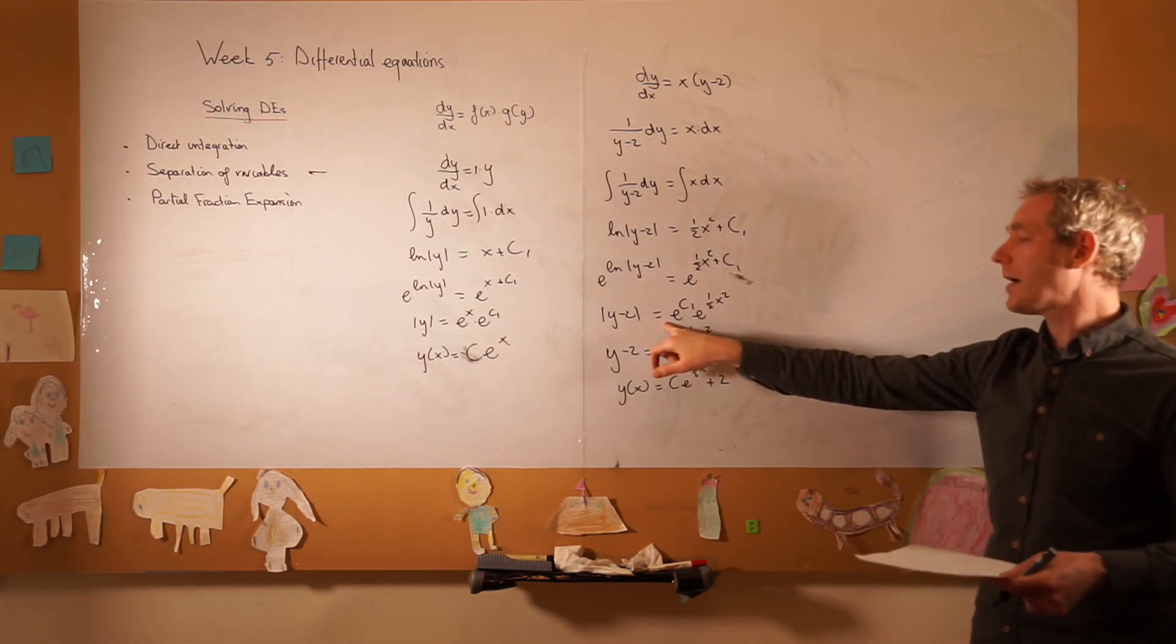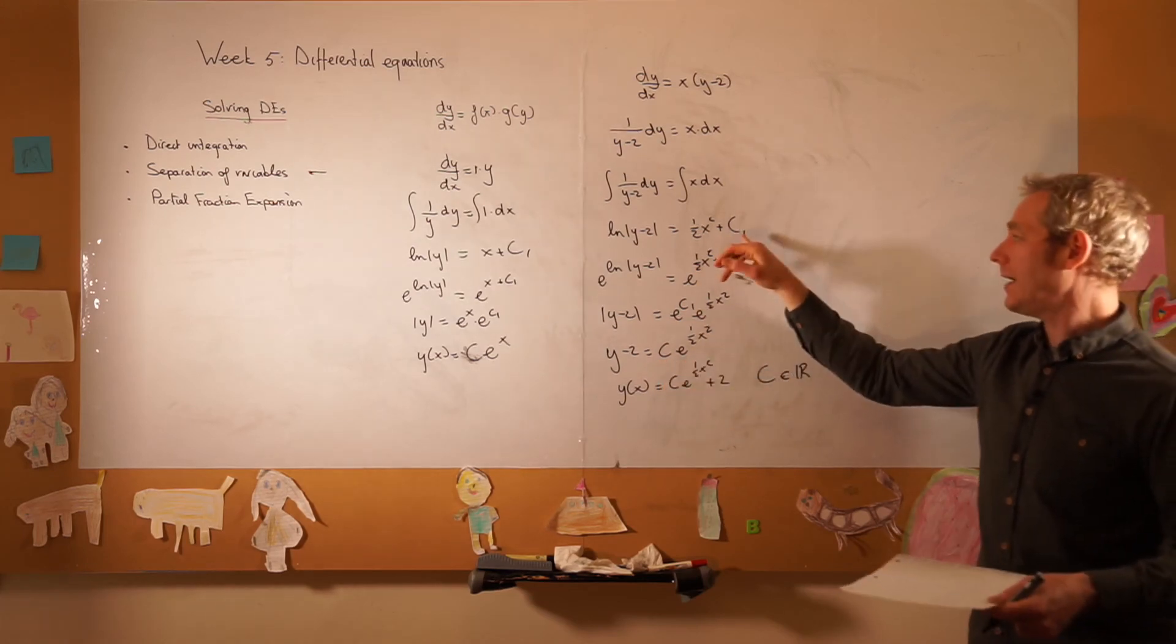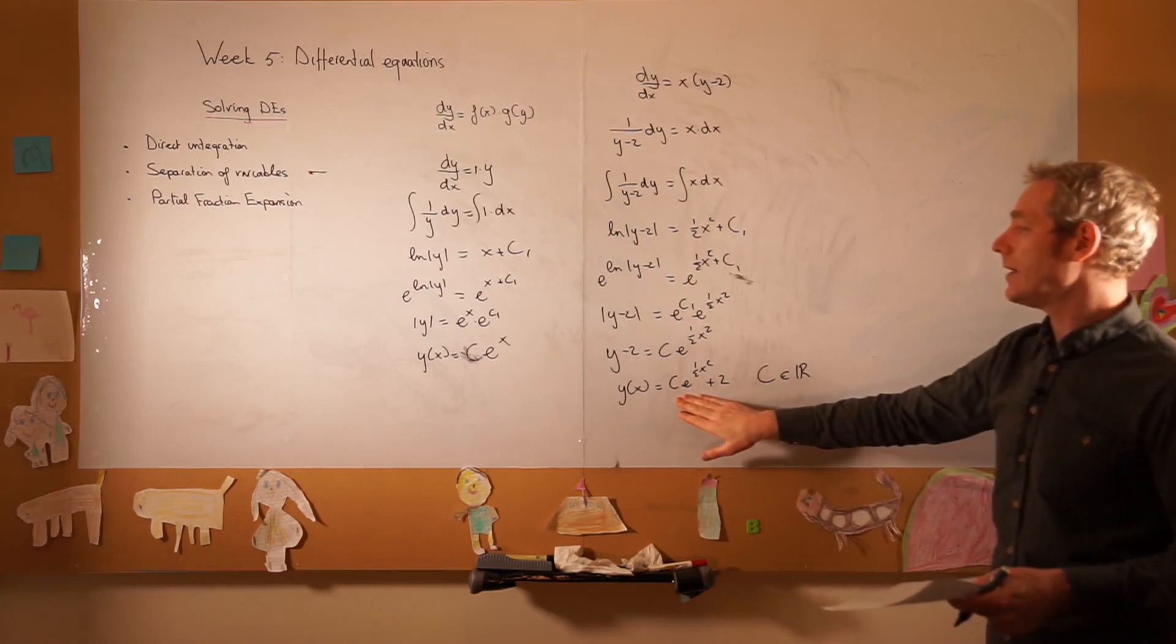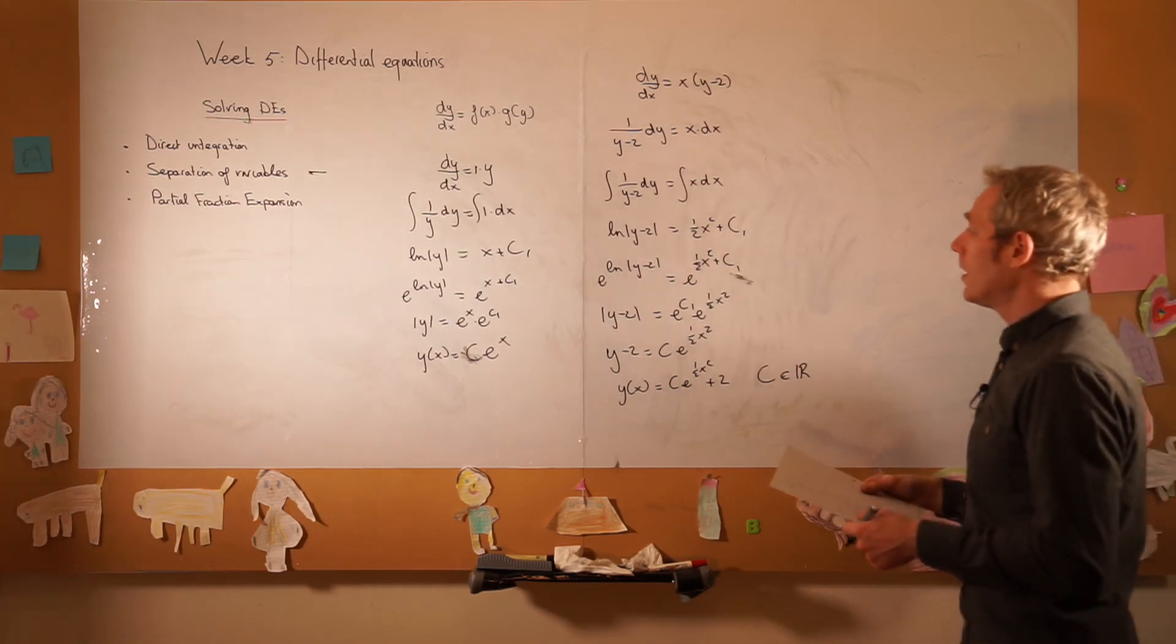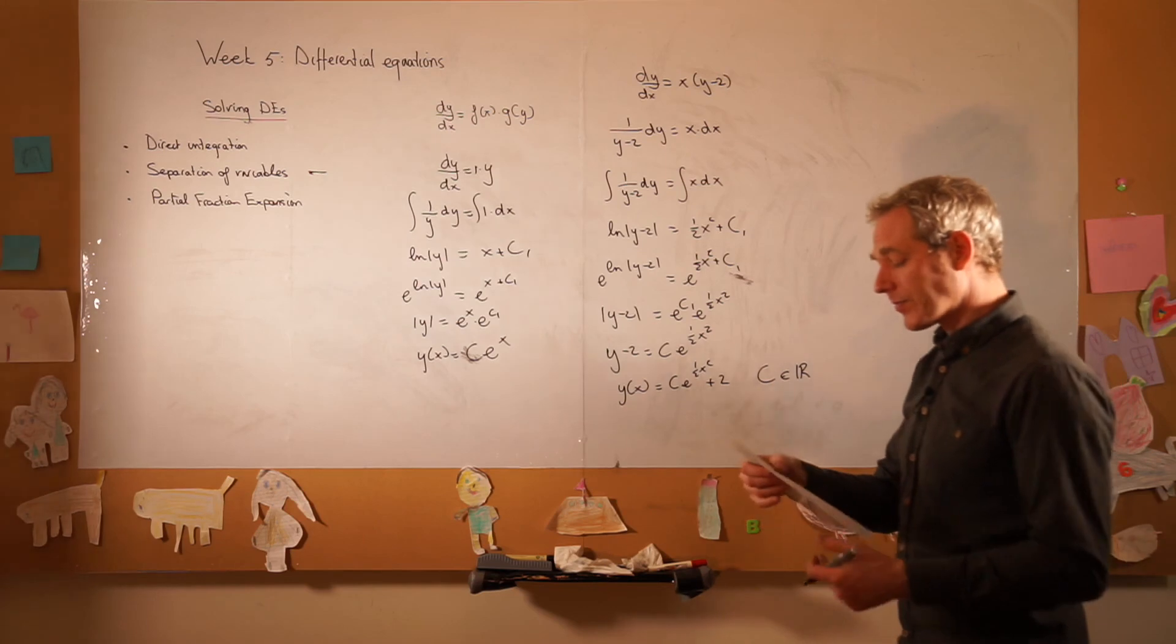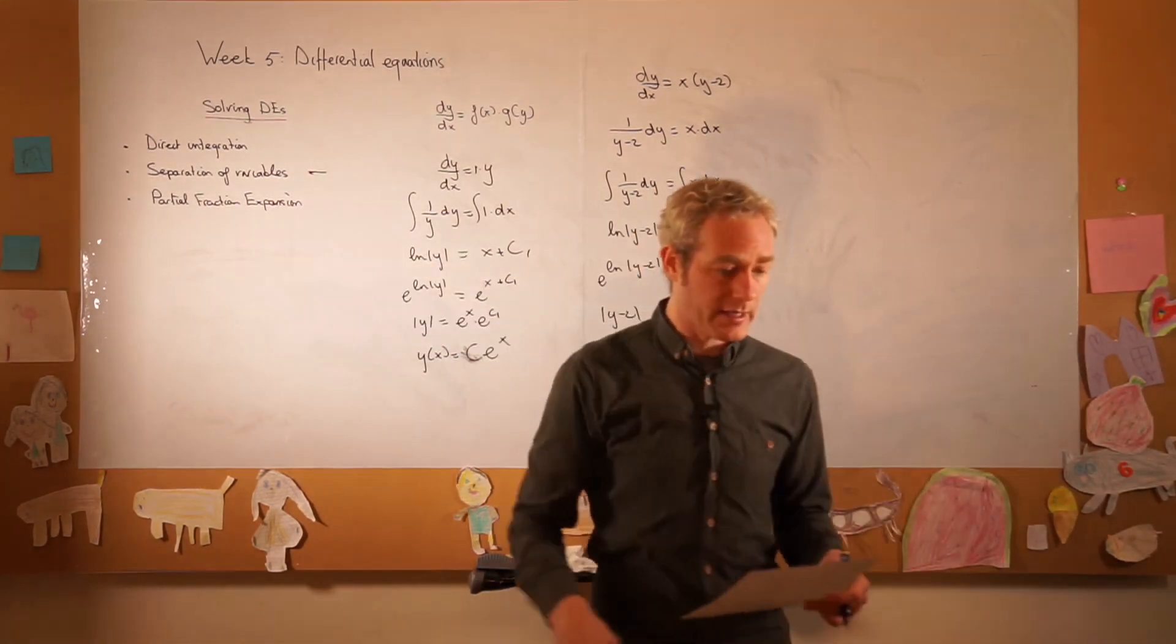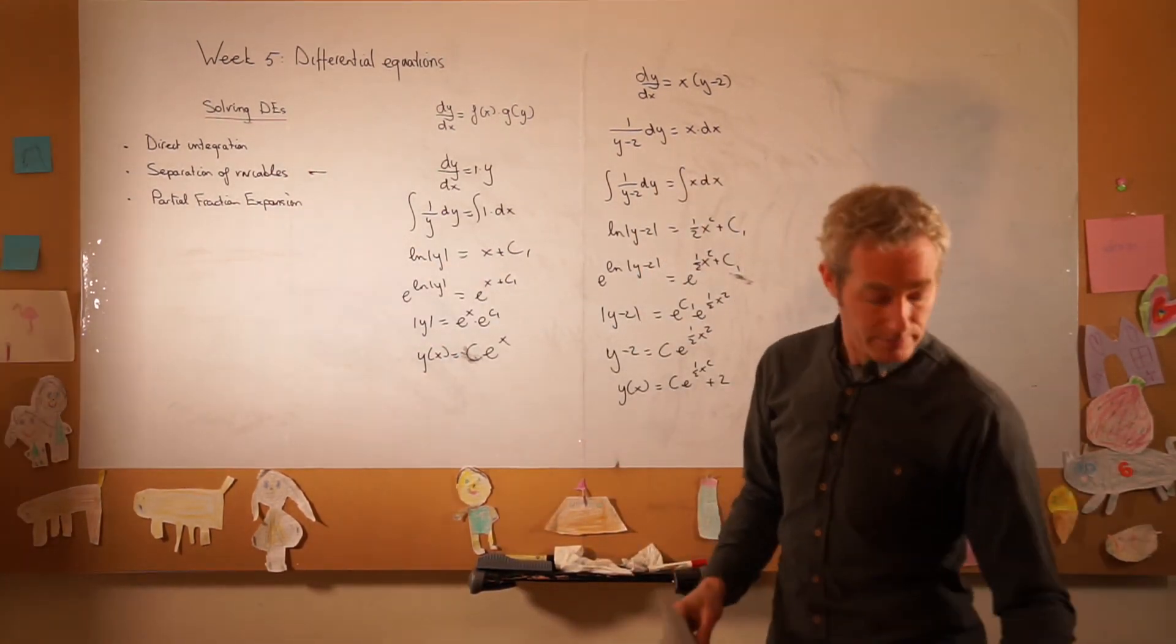When we have e to the power of c1, we just simply write c, or you can, if you choose c here, you can write a, or whatever name for your constant, doesn't really matter, but this is the way that we can write out our solutions. We will continue with probably one more example, and then we will move to partial fraction expansion, but we will do that in the next part.